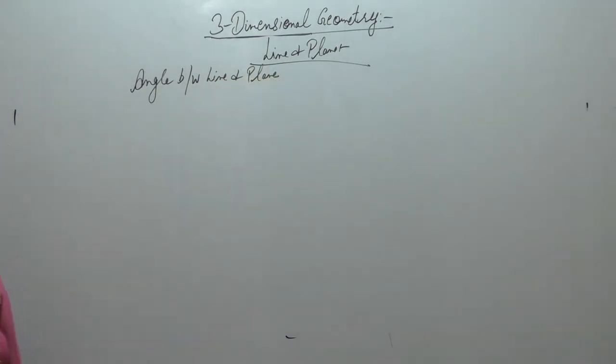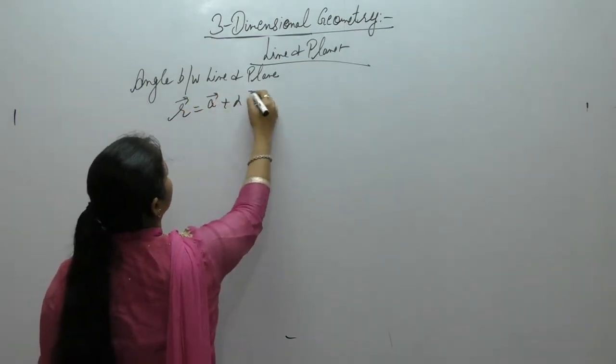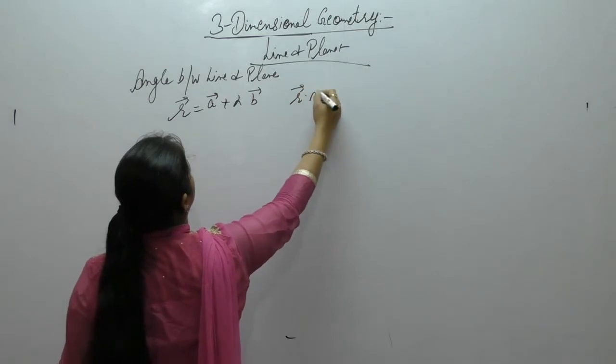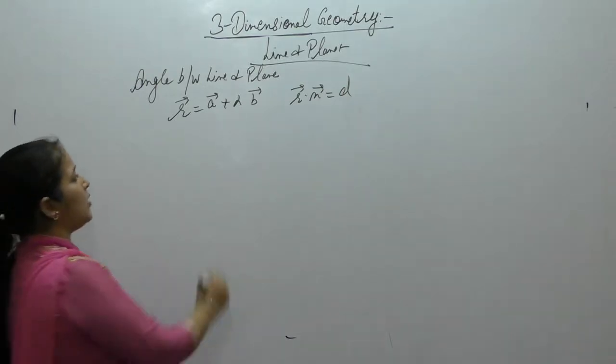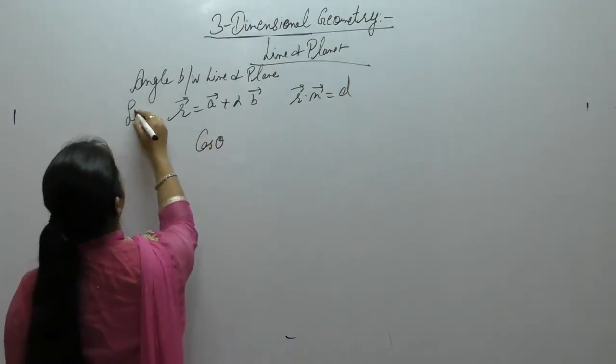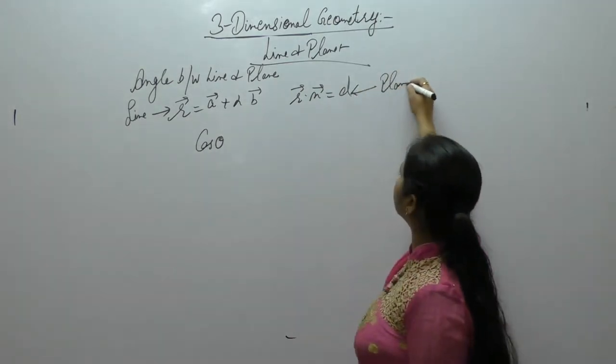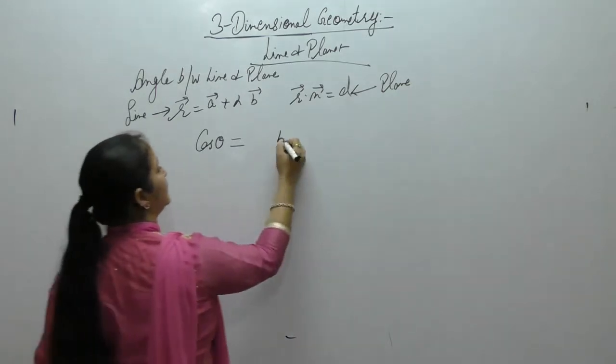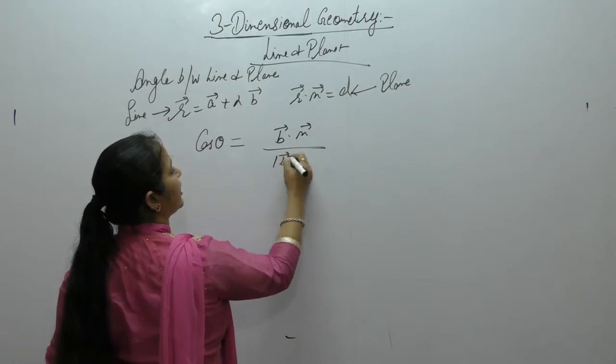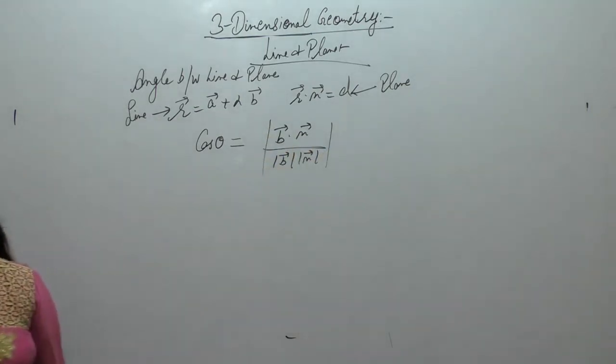Line has equation R vector is equals to A vector plus lambda B vector. Plane has equation R dot N vector is equals to D. Now, angle between line and plane. This is the equation of line and this is the equation for the plane. Cos theta is equals to B vector dot N vector upon magnitude of B magnitude of N.